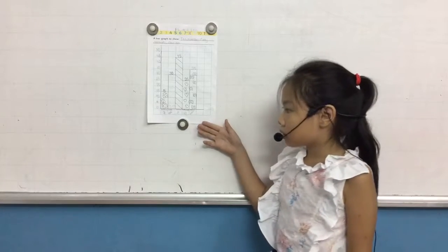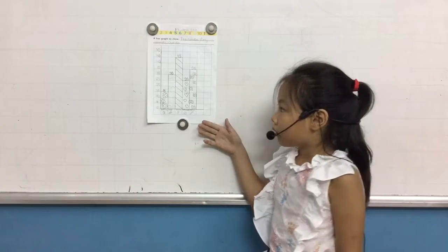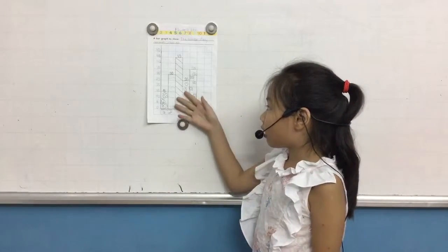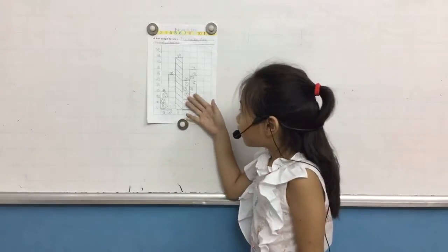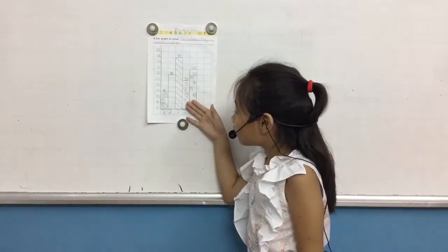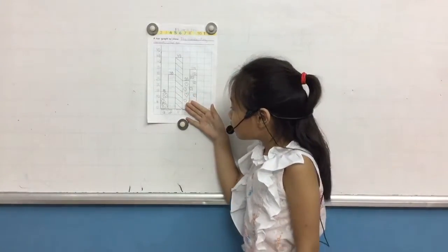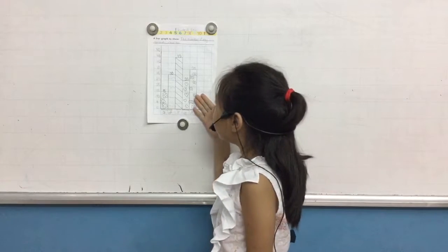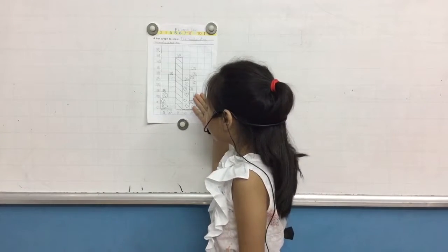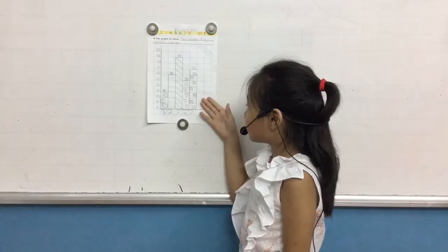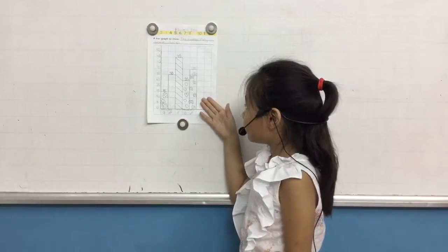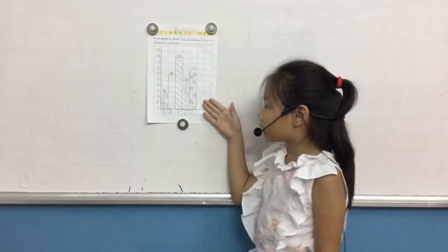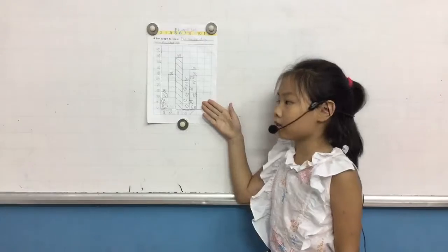There are 50 school bags, there are 30 rulers, 45 erasers, 25 notebooks and 35 pencils.